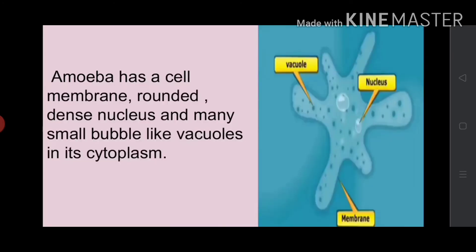Amoeba have a cell membrane, a rounded dense nucleus, and many small bubble-like vacuoles in its cytoplasm. Do you know what is cytoplasm? Cytoplasm is a gel-like liquid present in the cell of amoeba. The cytoplasm consists of a cell membrane, a dense nucleus, and many bubble-like vacuoles.